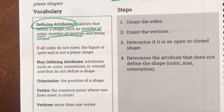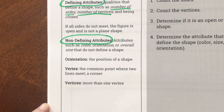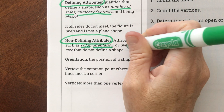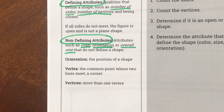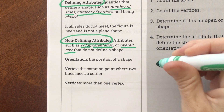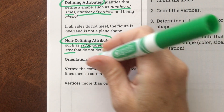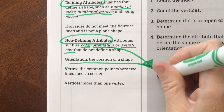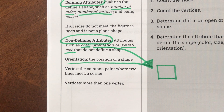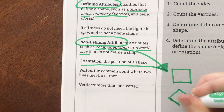Now let's look at non-defining attributes — let's circle that. Non-defining attributes don't define the shape and don't let us know what it is. They include attributes such as color, orientation, or overall size — those do not define the shape. Orientation means how it's positioned on the piece of paper. So orientation is the position of the shape — I could draw a square straight, or I could tilt it and draw a sideways square.